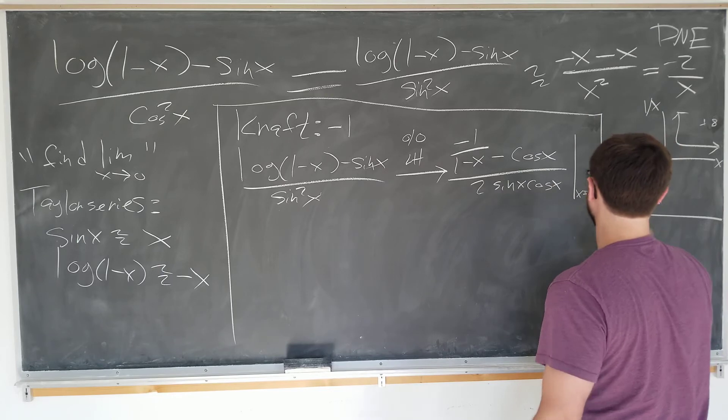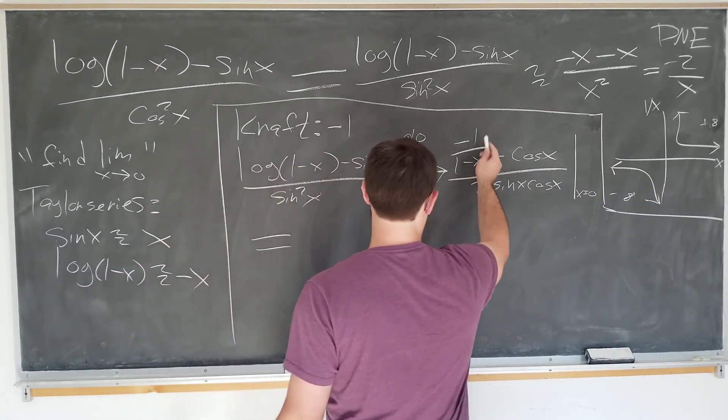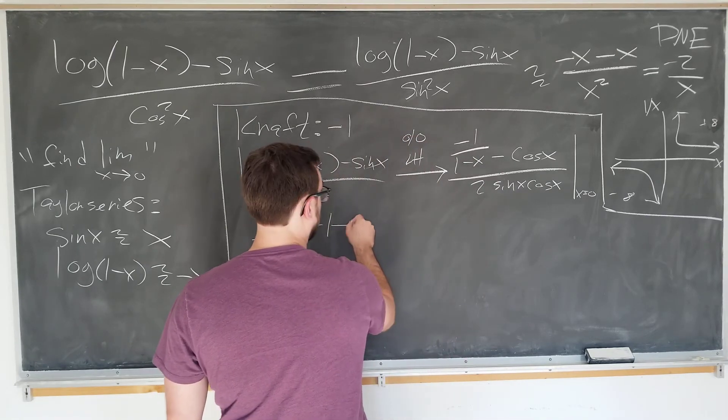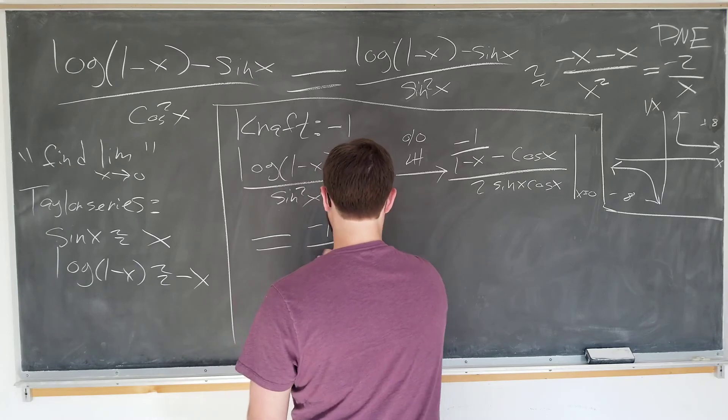Now plug in X equals 0. And she plugs it in successfully, mostly everywhere. We plug it in here, we get minus 1. Plug it in here, we get another minus 1, just like we get up top. And we have 2 cosine of 0, which is 1.